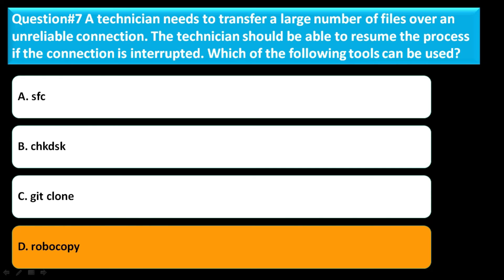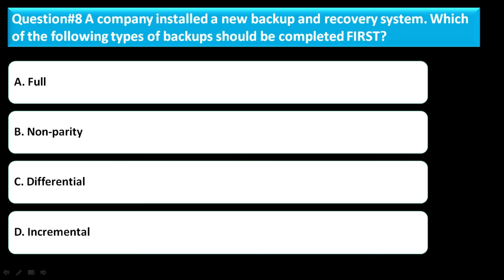Question number eight: a company installs a new backup and recovery system. Which of the following types of backup should be completed first? Option A: full. Option B: non-parity. Option C: differential. Option D: incremental. The correct answer is full.